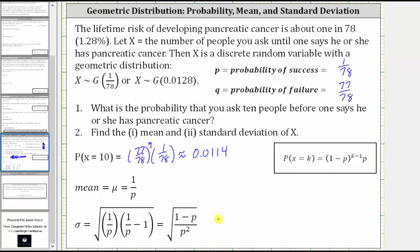I do want to mention, if we use the decimal for 1.28% or 0.0128, we would have more of an error when determining this probability.